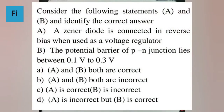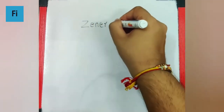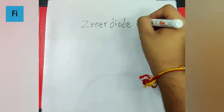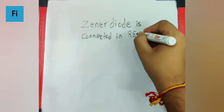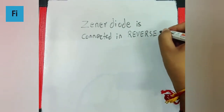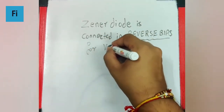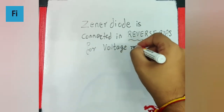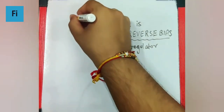The question says: consider the following statements A and B and identify the correct answer. Statement A says a Zener diode is connected in reverse bias when used as a voltage regulator — and yes, that is correct. Zener diode is connected in reverse bias for voltage regulation, so statement A is correct.